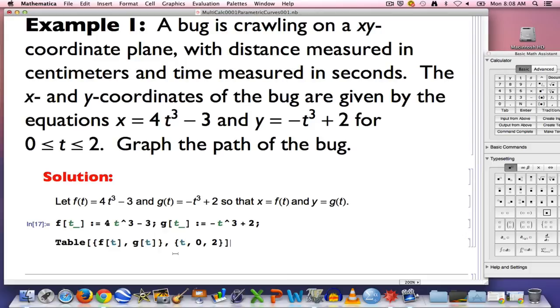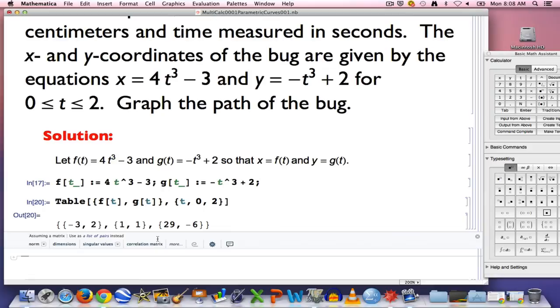If I don't add any other options to what you see here, it will plot three points. It will not plot them, but it will calculate them. For t equals 0, t equals 1, and t equals 2. Those are the outputs. You should check that. The first point is (-3, 2) when t is 0. Then (1, 1) when t is 1. Then (29, -6) when t is 2.